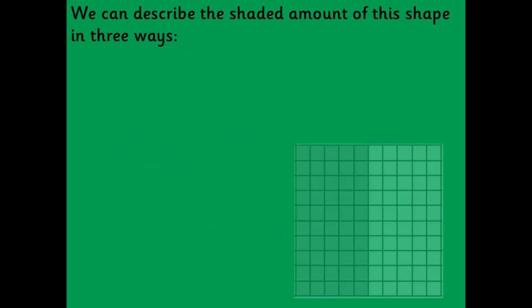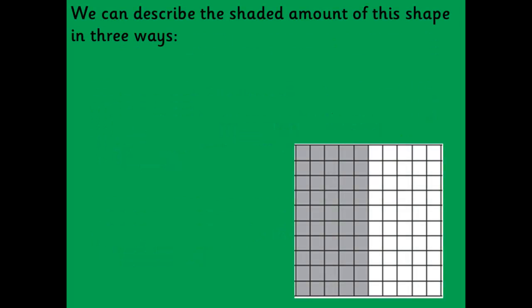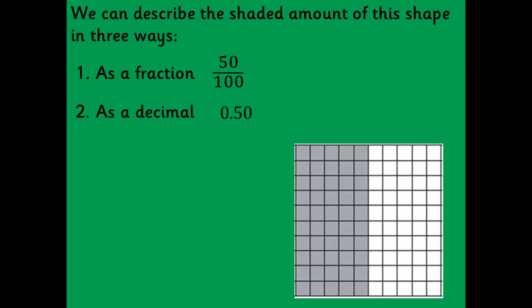We can describe the shaded amount of this shape in three ways. We can describe it as a fraction and that is 50 one hundredths. We can describe it as a decimal and that is 0.5 or 0.50. Or we can describe it as a percentage, 50%.